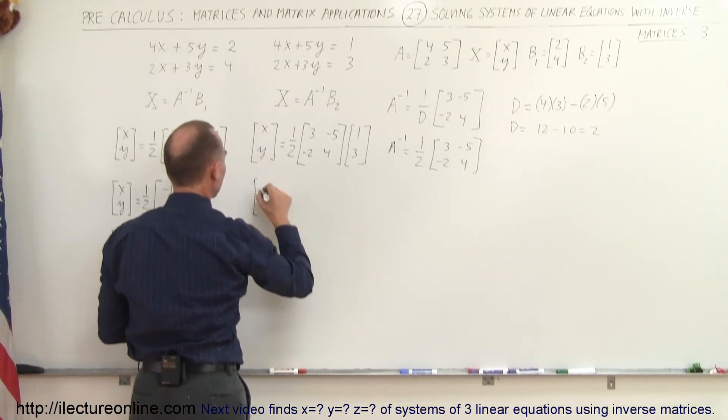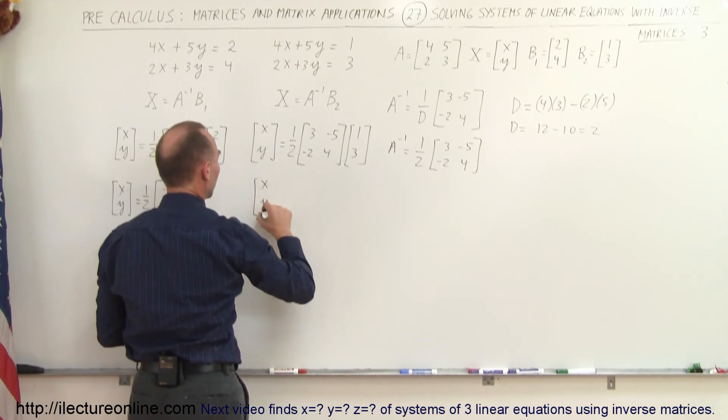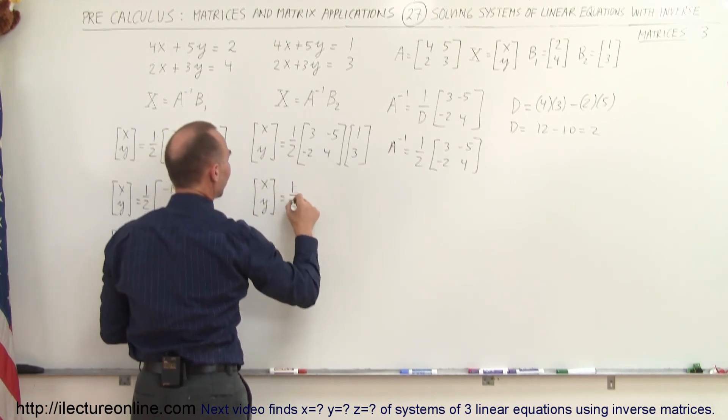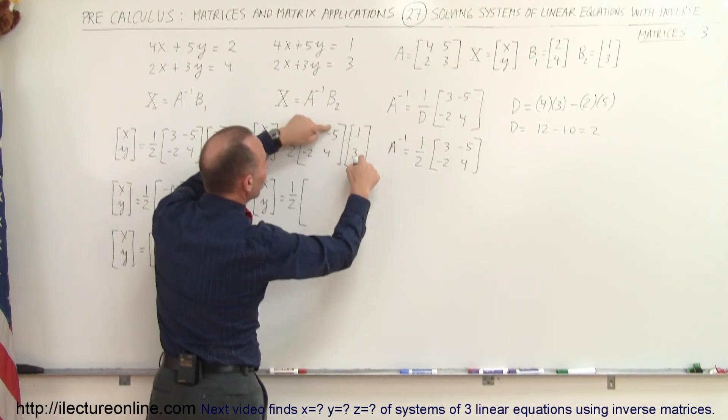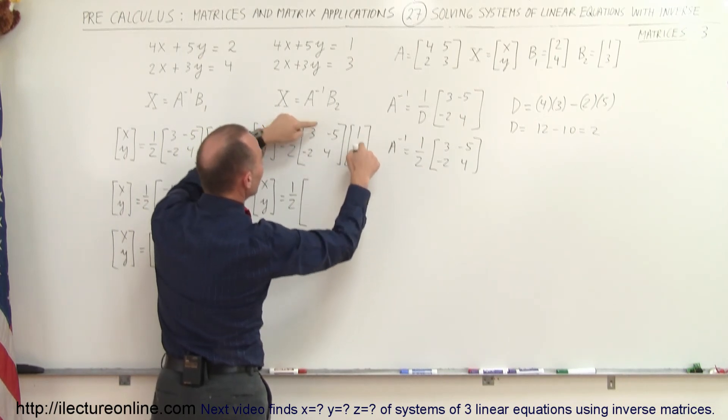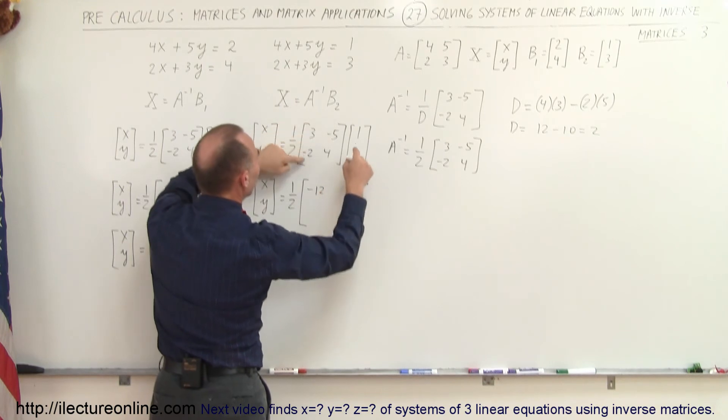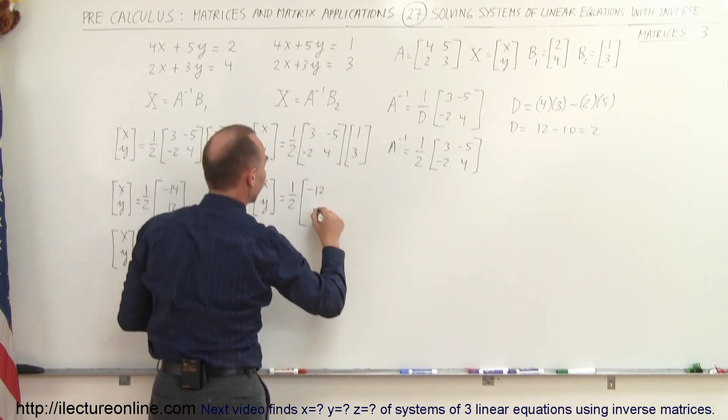In this case we can say that x and y is equal to 1 half times 3 times 1 is 3, negative 5 times 3 is minus 15, so 3 minus 15 is minus 12. And here we have minus 2 plus 12, which is plus 10.